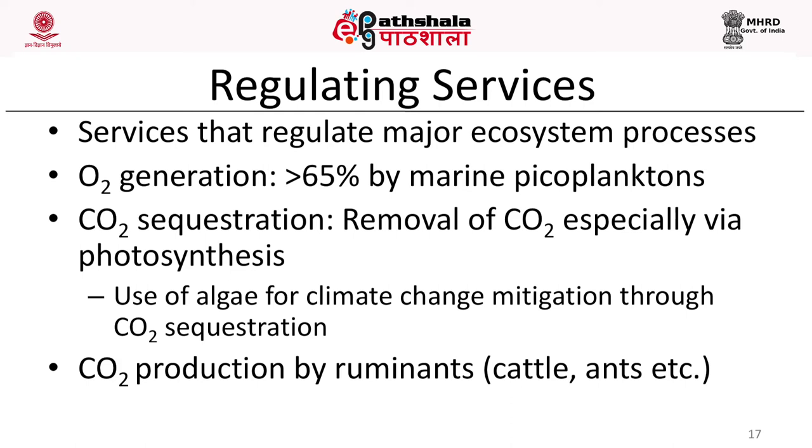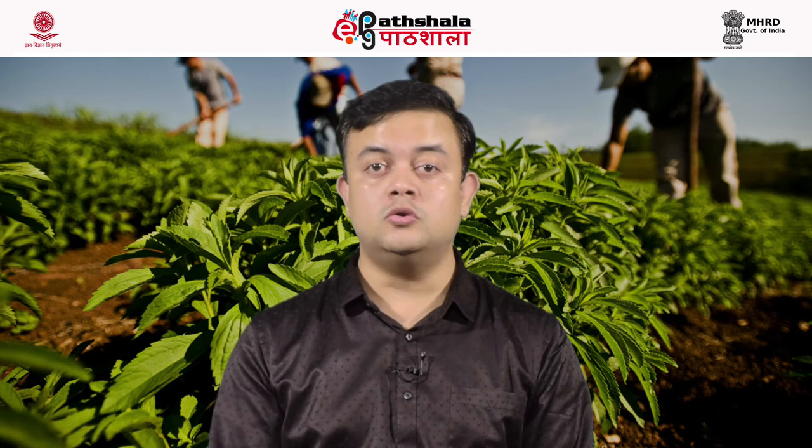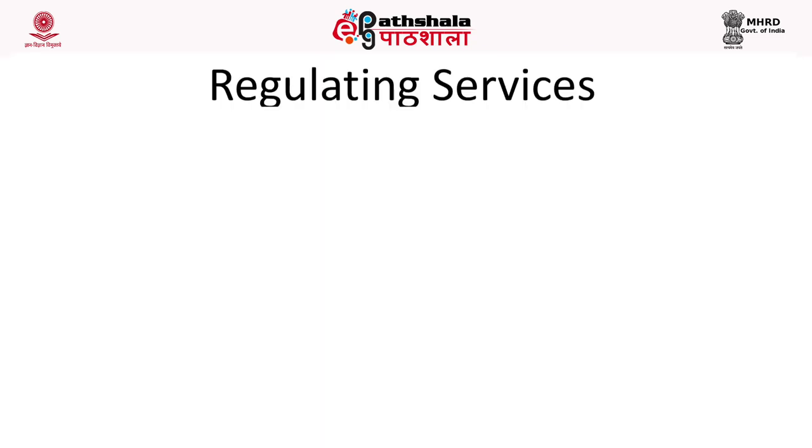CO2 production by ruminants is also relevant. A number of ruminants, for example cattle, and non-ruminants such as ants — which have a compartmentalized stomach containing methanogenic bacteria that release CO2 to the atmosphere — are contributing factors to global warming. Carbon dioxide production by cattle and ruminant organisms contributes to global warming, and it's not merely CO2 but also methane, which is also a greenhouse gas.